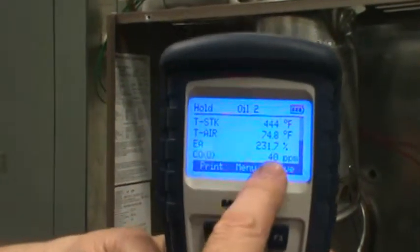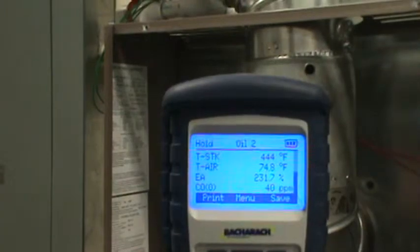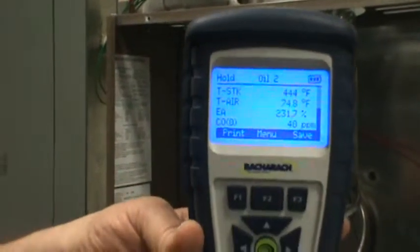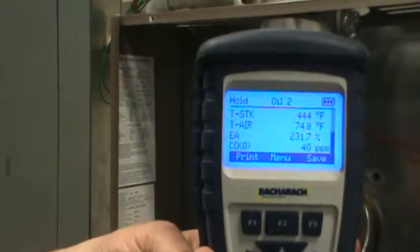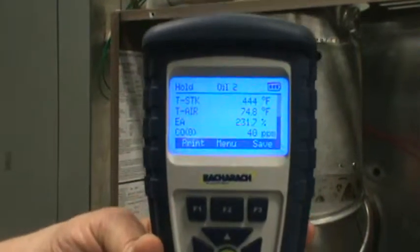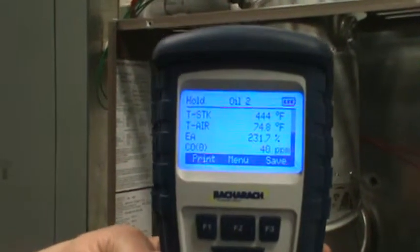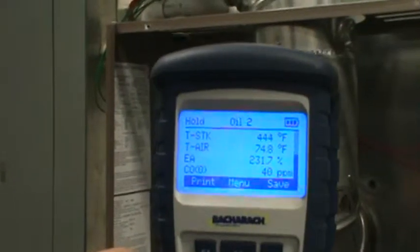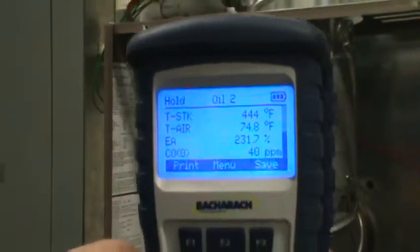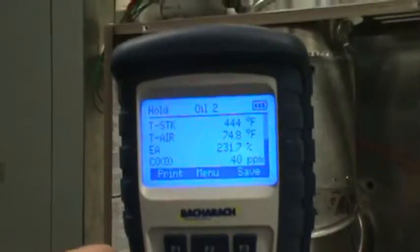The COO is telling me 40 parts per million. That's a good burn. So what that COO is saying, if you didn't have any excess air, what carbon monoxide will be put out by this system? So that's a good indicator of how well my burn is, how well the device is actually burning.